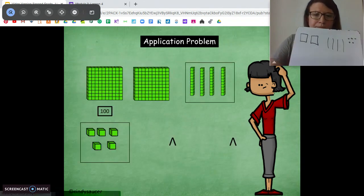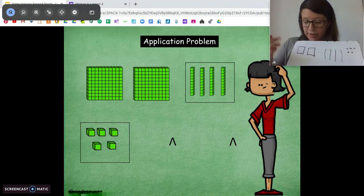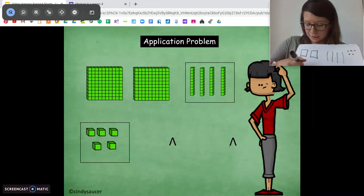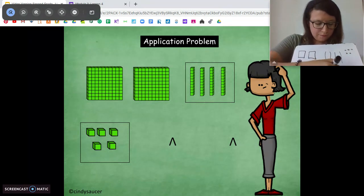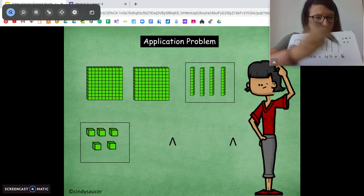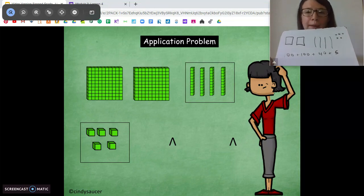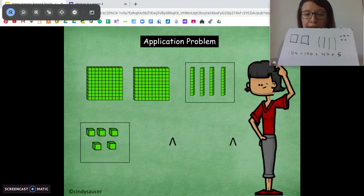So we can solve this in a couple different ways. We can add each part. We can do 100 plus 100 plus 40 plus 5. One way to solve it. Or we can just kind of count our pieces here. Go ahead and solve it in whatever way makes the most sense to you. Pause the video and solve it. Come back when you're ready.